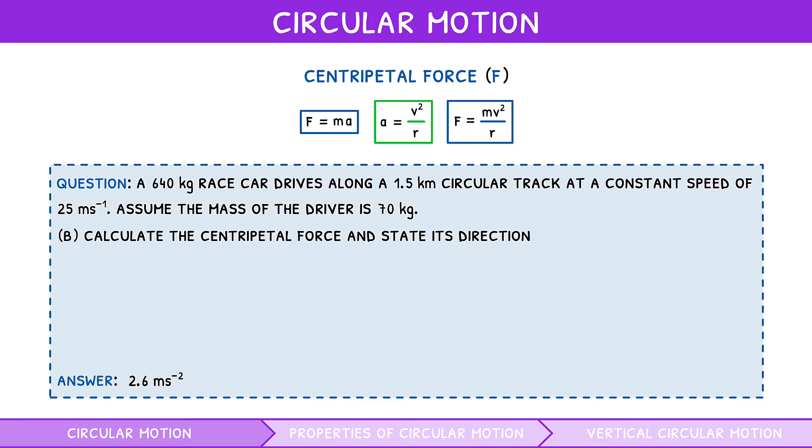For part b, the equation to use is force equals mass times centripetal acceleration. So, substituting in the values of mass and acceleration, and solving for force, we get 1900 newtons, which acts towards the centre of the track.